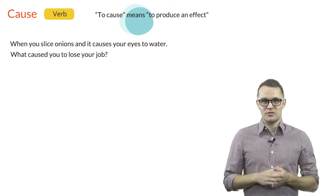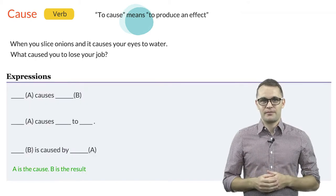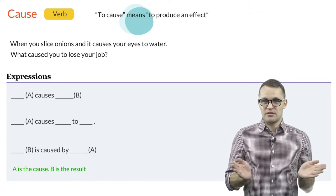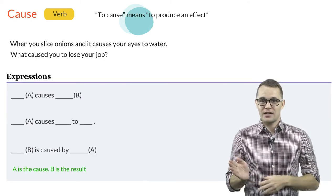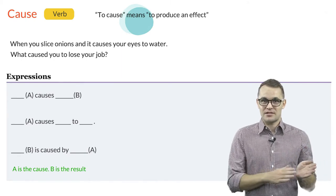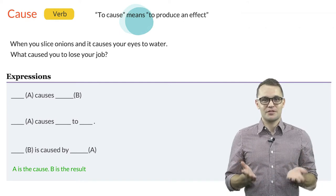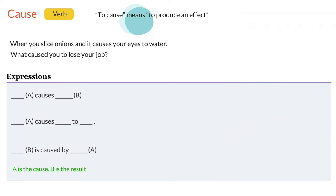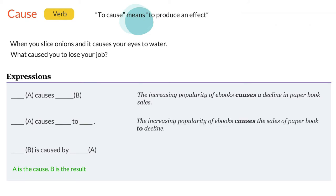So patterns which are often used with the verb cause are the following. A causes B or A causes B to do something. And B is caused by A. Here are examples for each of the patterns. The increasing popularity of e-books causes a decline in paper book sales. The increasing popularity of e-books causes the sales of paper book to decline. And the decline in paper book sales is caused by the increasing popularity of e-books.